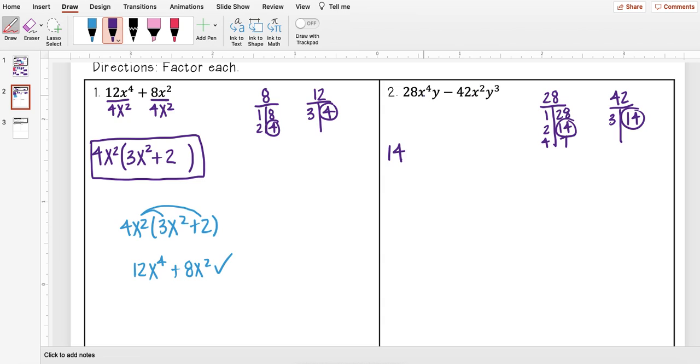The smaller exponent for my x's is x squared. The smaller exponent for my y's is y. And then I'm going to divide each term by my GCF. So 28 divided by 14 I get 2. x to the fourth divided by x squared I get x squared. Y divided by y I just get 1. Carry down my minus sign. 42 divided by 14 I get 3. x squared divided by x squared I just get 1. y cubed divided by y that's really 3 minus 1, and I get y squared.